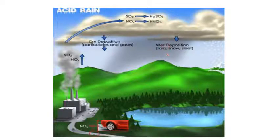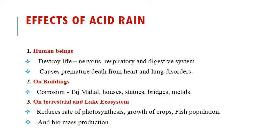This is the formation of Acid Rain. Due to Acid Rain, there are many side effects — not only on human beings, but also on aquatic animals, terrestrial ecosystems, and buildings. The first effect on human beings is that it destroys life, affecting the nervous system, respiratory system, and digestive system. The second effect is it causes premature death from heart and lung disorders.